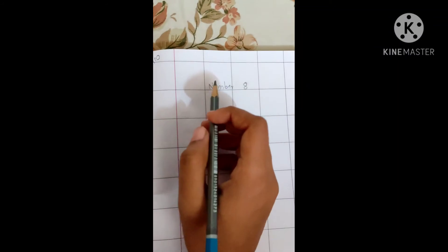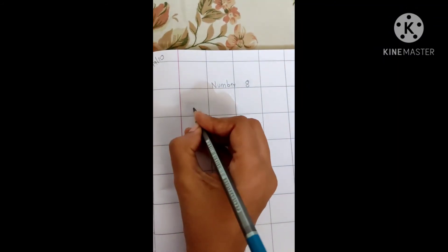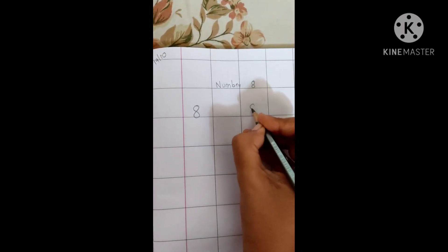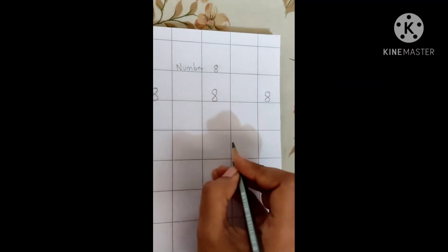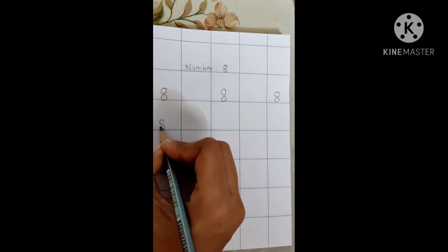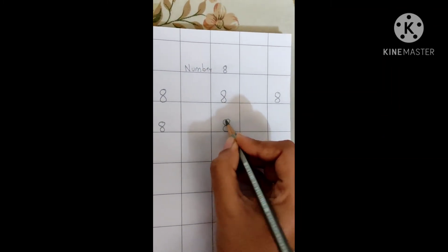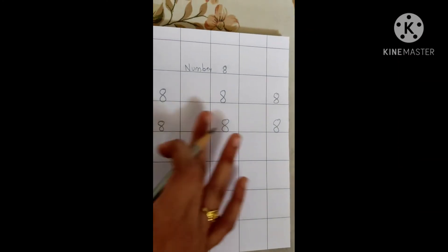Then take out your math notebook. Open the book. Write number 8. So let us write number 8. 8, 8, 8, 8. Like this you have to write 8.